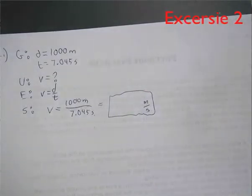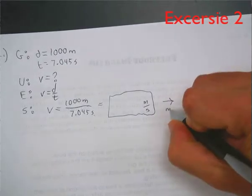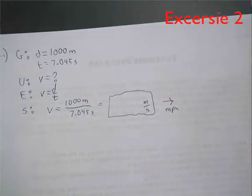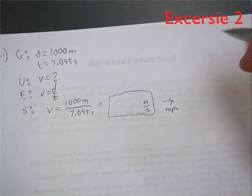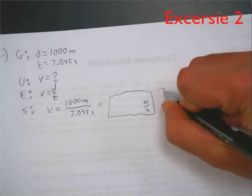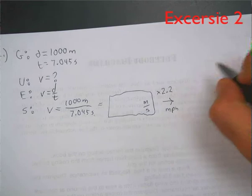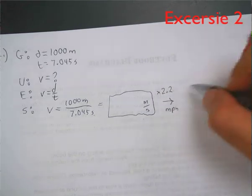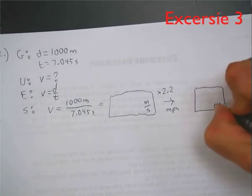We want to make sure our answer is in meters per second. They also want us to convert it to miles per hour — you can use an app for that. I'm not expecting you to manually convert meters to miles and seconds to hours; that's more of a math problem. A good number to remember: multiply meters per second by 2.2 to get miles per hour.